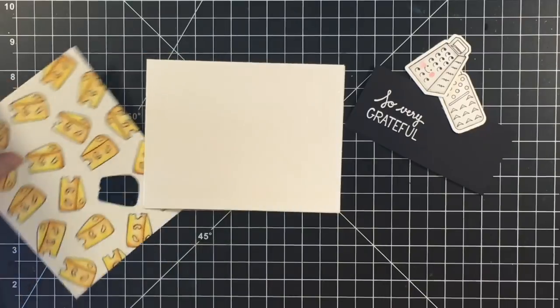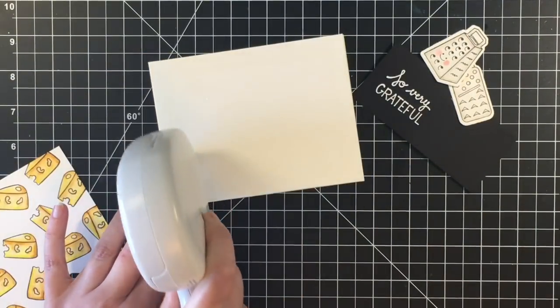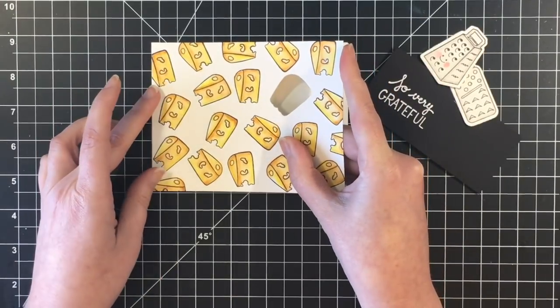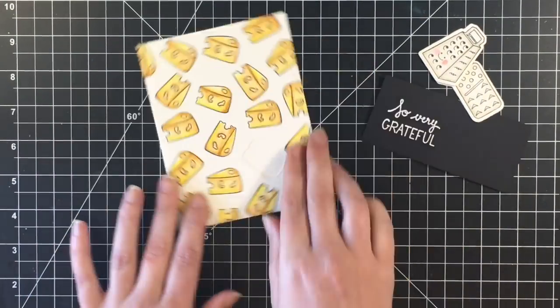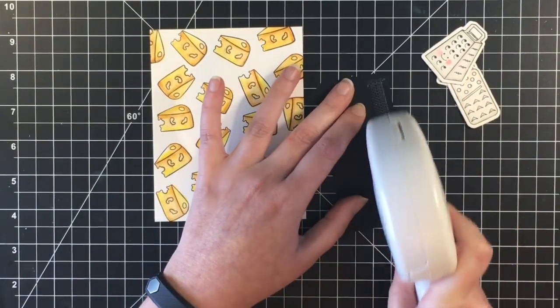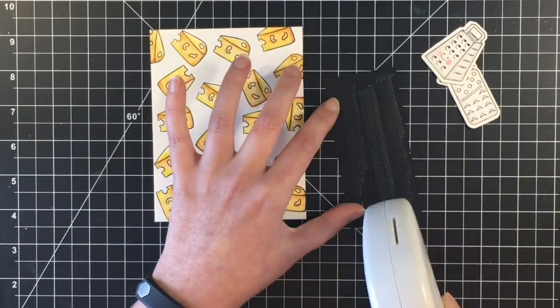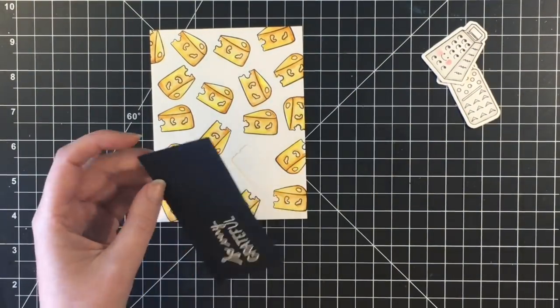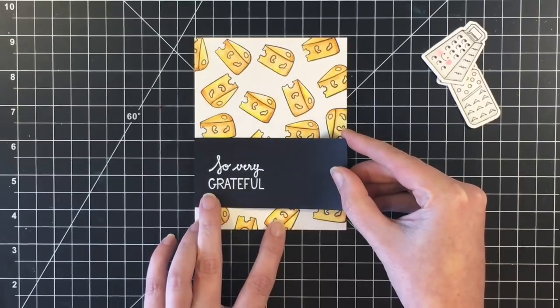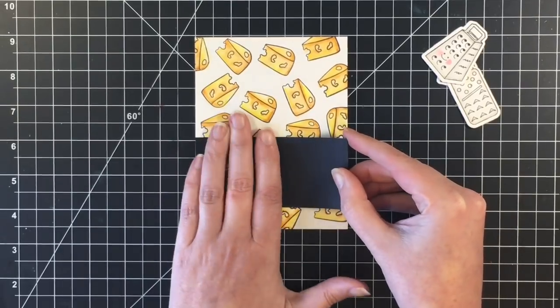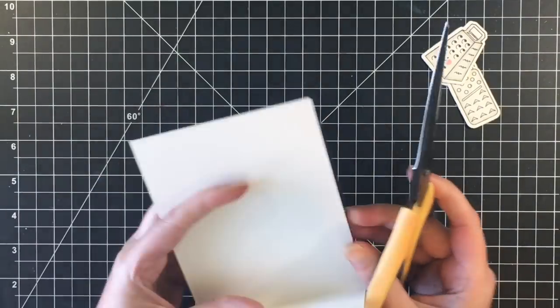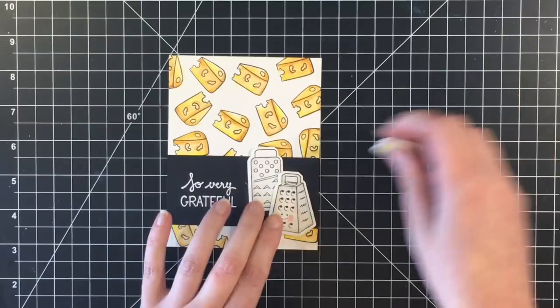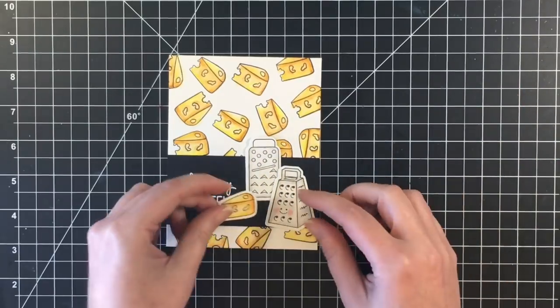I'm using a four and a quarter by five and a half A2 size card base. I made this out of Canson XL watercolor paper as well so that it matched with the front panel here. I'm just using my new to me Xyron adhesive tape runner. I'm still kind of getting used to it. It goes on much differently than the ATG gun, so I'm just getting a little practice. But so far I like it. I did need to trim up that sentiment strip a little bit, and then I'm going to place the images on the card.